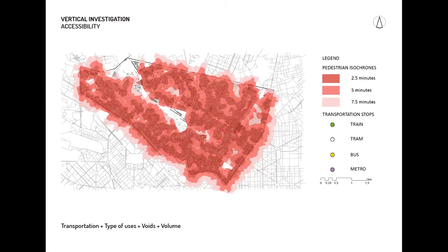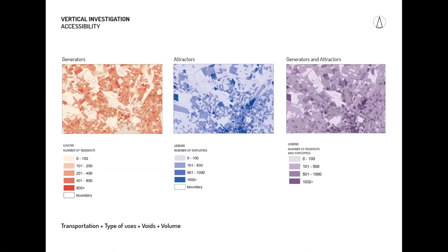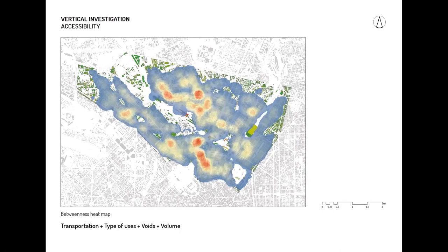Accessibility is useful to see the uneven distribution of transportation modes and which parts are not easy to access. Here, I applied pedestrian isochrones based on the street network, which depend on different time hierarchies. This slide is dedicated to the people, who are the most important users of the built environment. This map shows the number of residents, employees, and both together respectively. The data source is Istat. Betweenness is another metric in accessibility — in a nutshell, it shows the fraction of shortest paths between pairs of nodes in the network that pass by buildings.